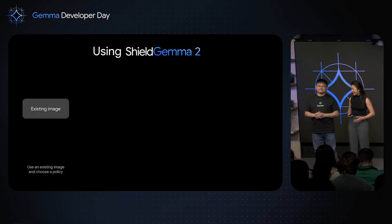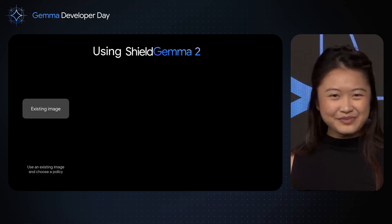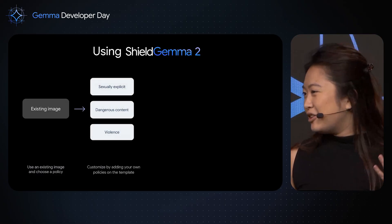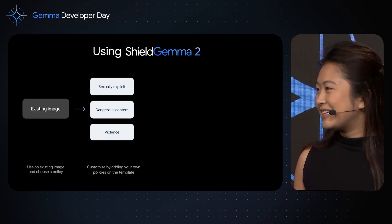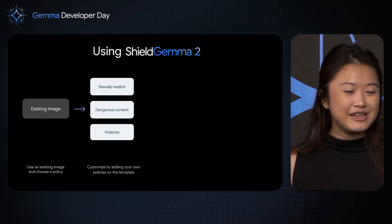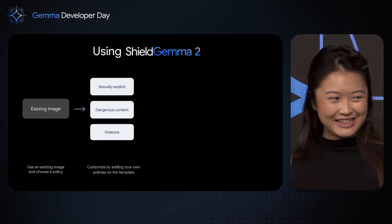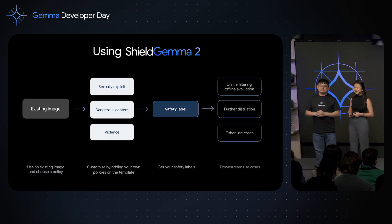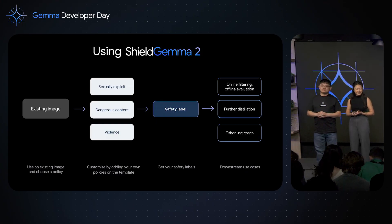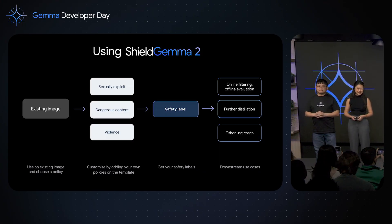Let me recap step by step what this actually looks like in practice. You have your existing image. You can then customize your policy — we cover key harms such as sexually explicit, violent content, and dangerous content. You can customize this further in our prompt template, and Wenjun will go into more detail on that. Next you get your safety policy — these are the probabilities of tokens per image per policy. Finally you can adapt this for your needs: online filtering, offline evaluation, further distillation for model development, or extending it to downstream use cases. It's really just image, policy, and label — as simple as that.